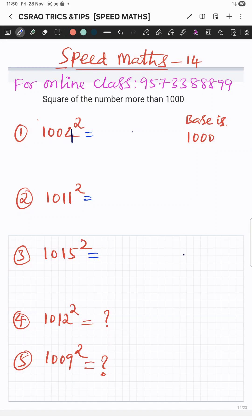Namaste everyone, today we are going to discuss square of the number more than thousand. Here thousand having three zeros. Now the square of the difference should be three-digit number, you must remember that one.